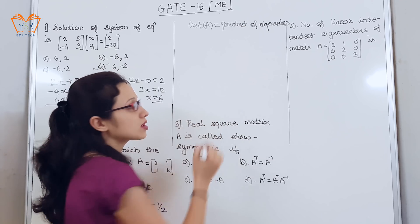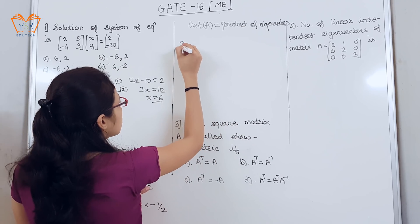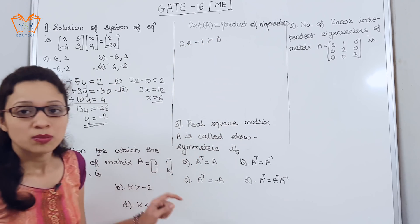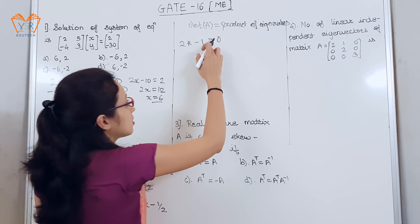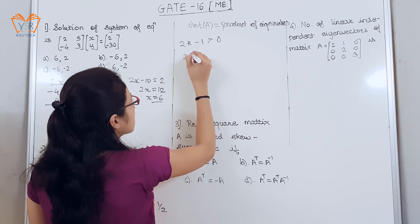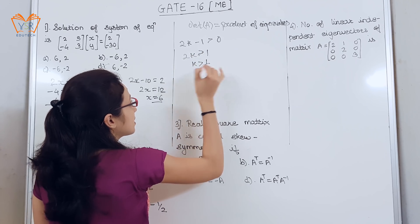So, we can see that product will be positive. So, the determinant 2k minus 1 is greater than 0. Positive means we put the condition that it should be greater than 0.